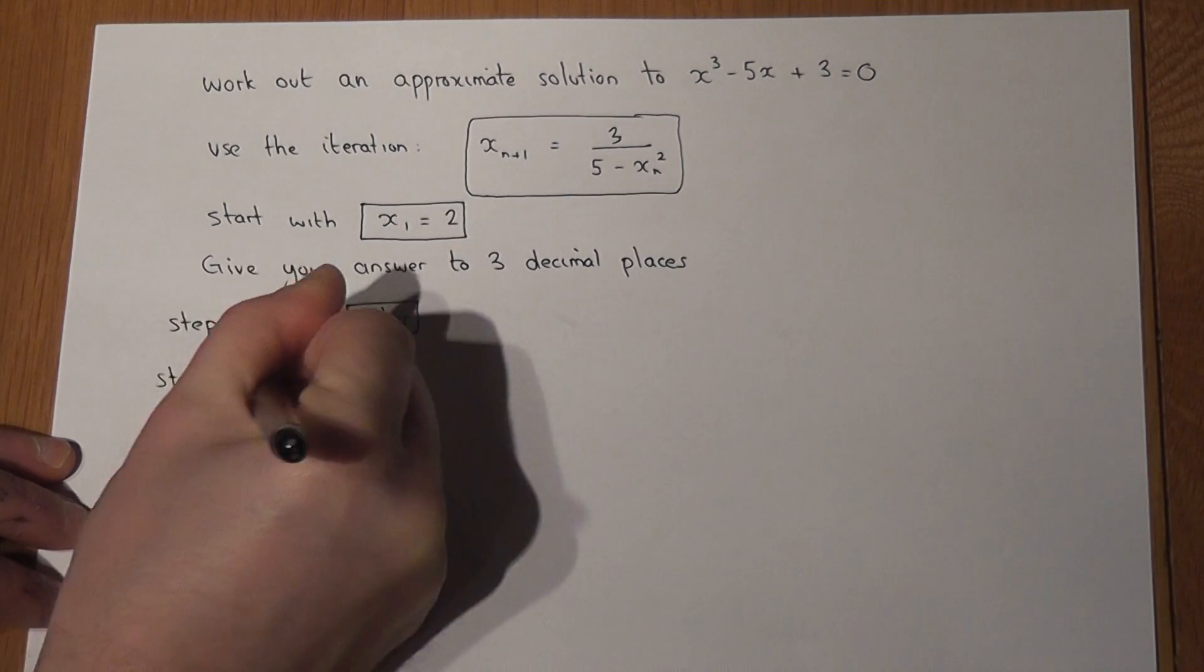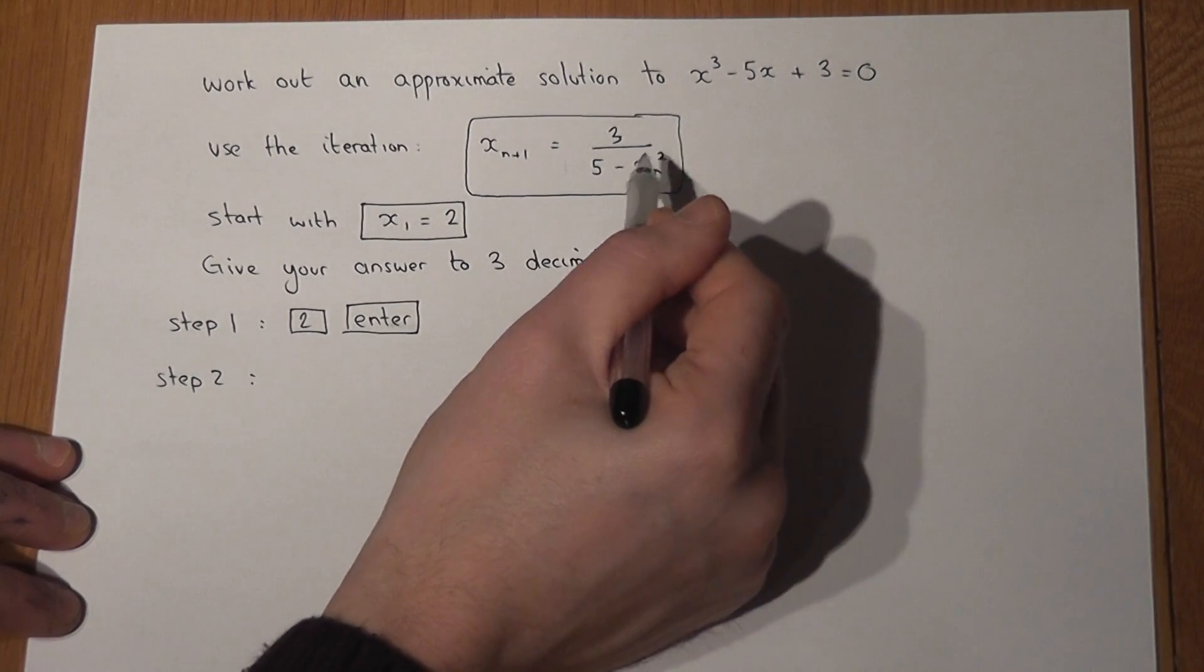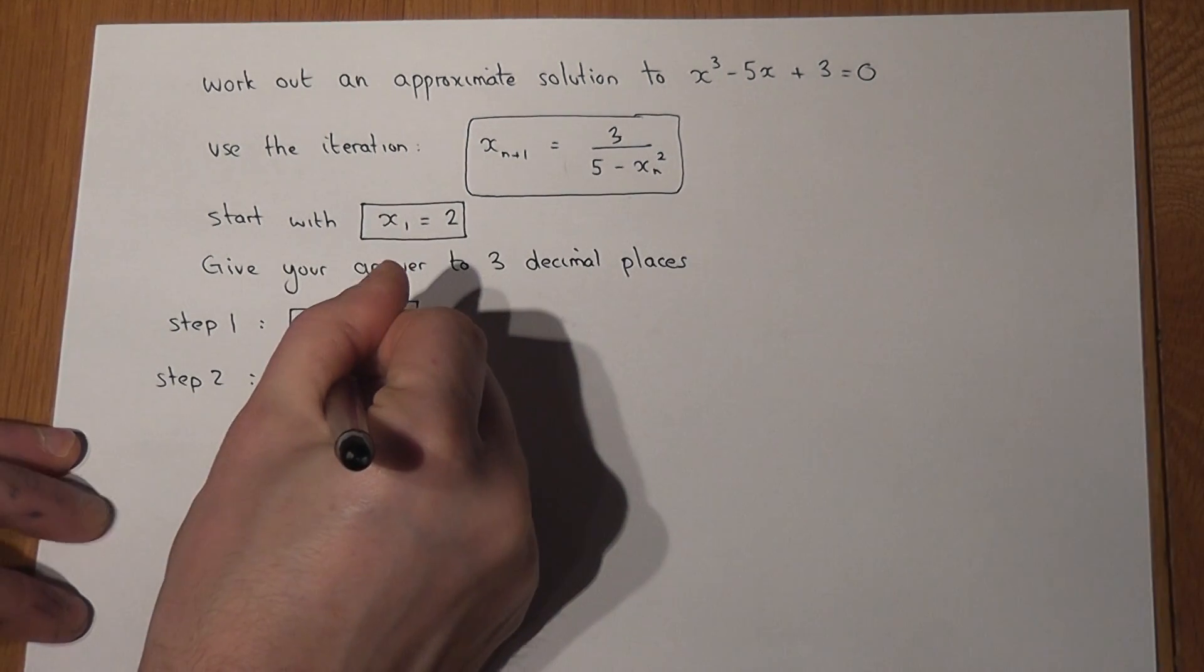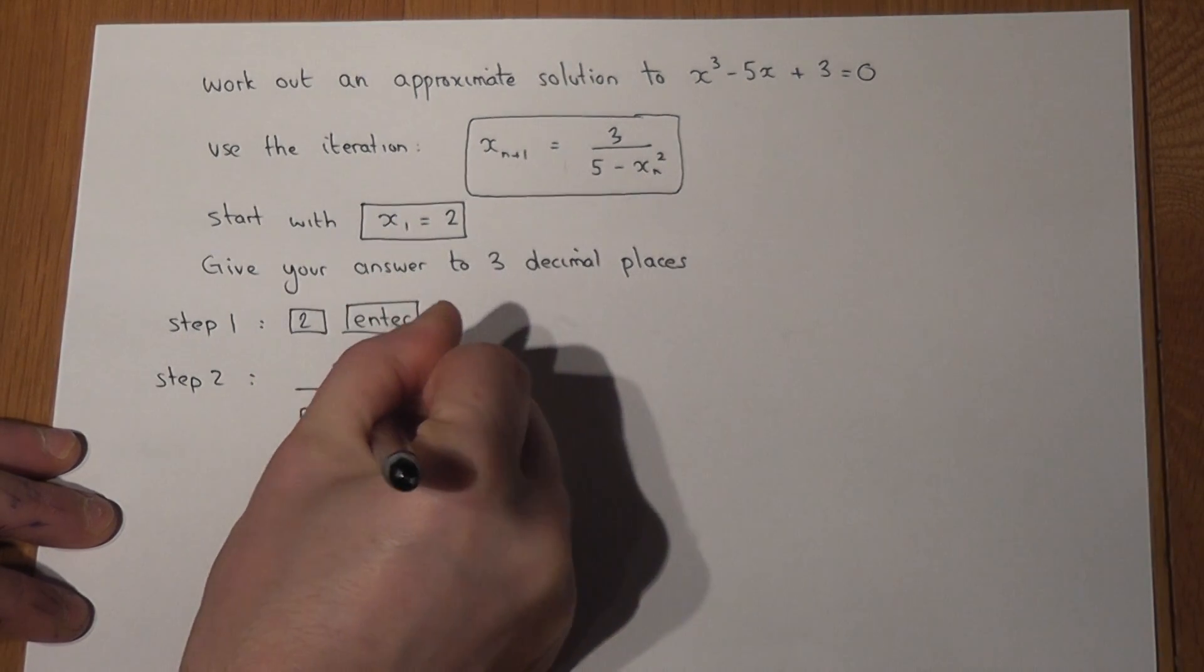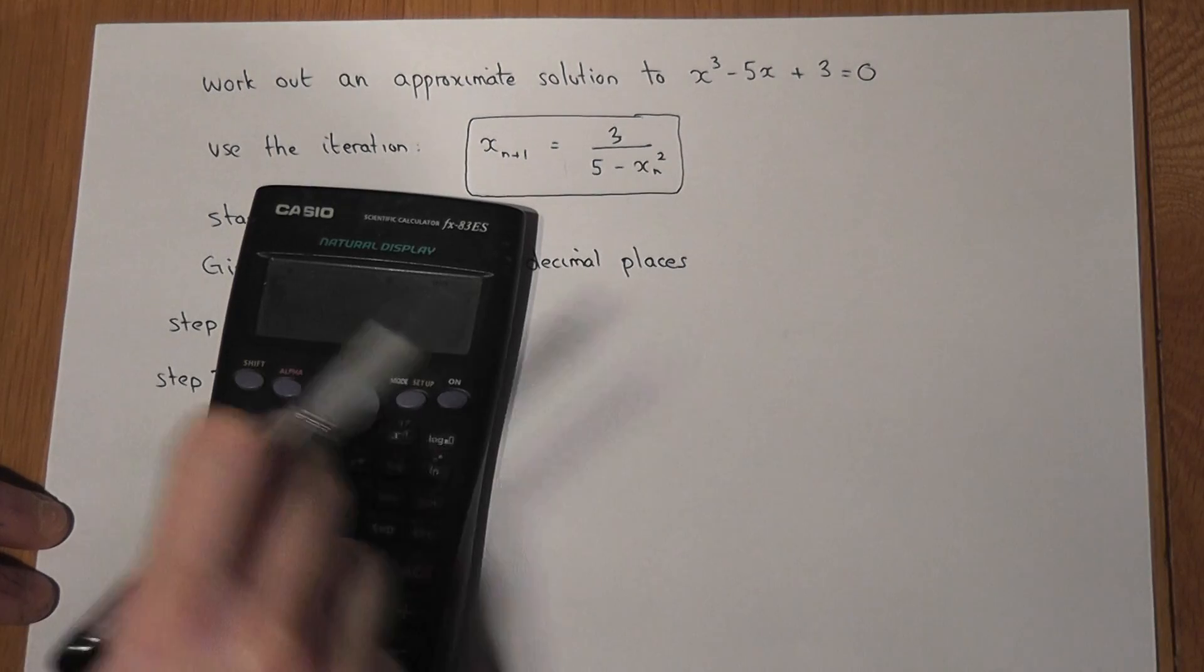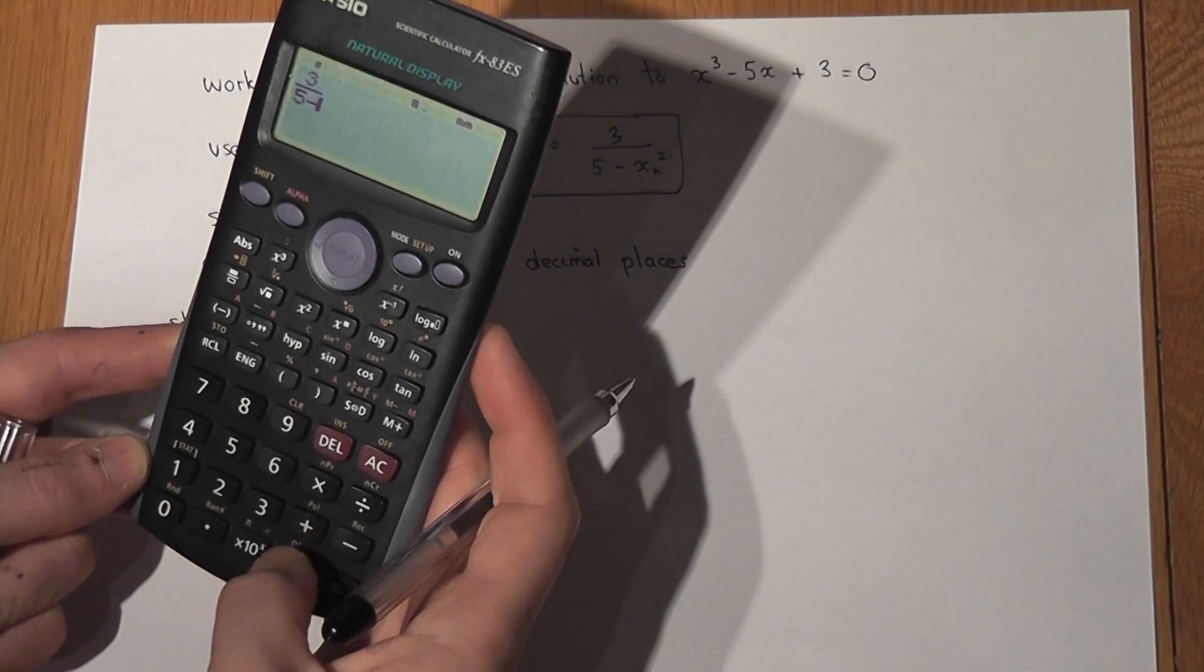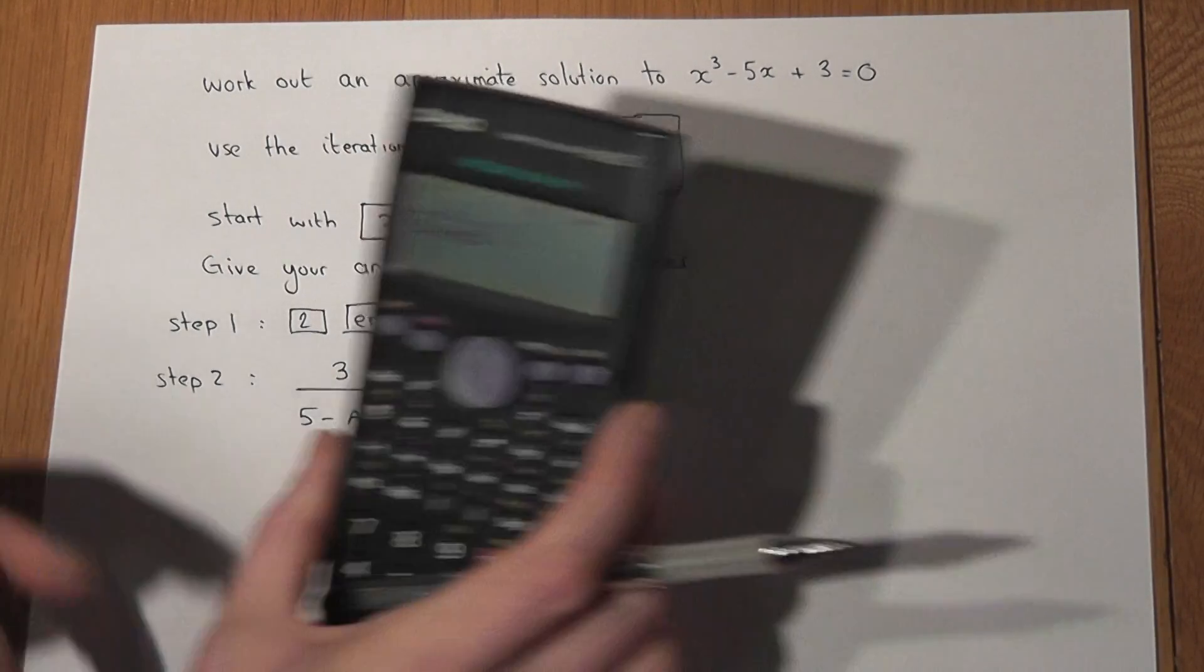Step two is really simple: we enter this iteration formula into the calculator but replace the xₙ by the xₙ on the calculator. So I'll have 3 over 5 minus xₙ squared. On my calculator, I'll push the fraction button, put the 3 on the top, go below and put 5 minus xₙ squared. So that has now been entered into the calculator.